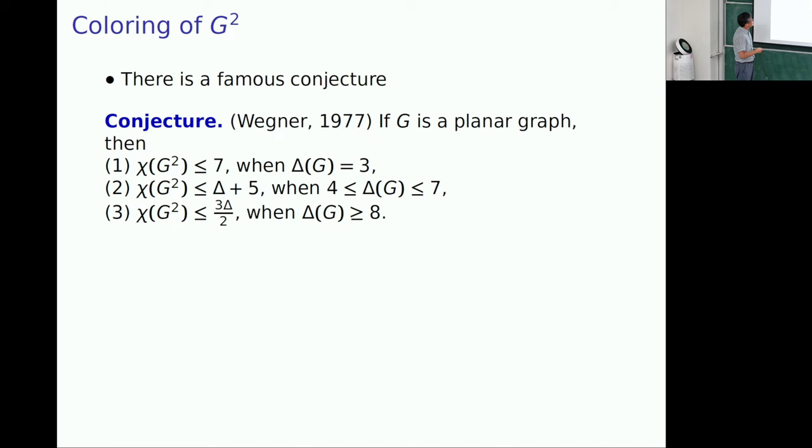And in this area, there's famous conjecture by Wegner. So if G is planar graph, then upper bound is this way. So if cubic, then upper bound is 7. So if maximum degree between 4 and 7, then upper bound delta plus 5. And then in general, this ratio.